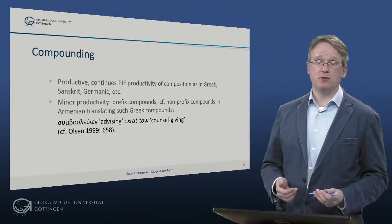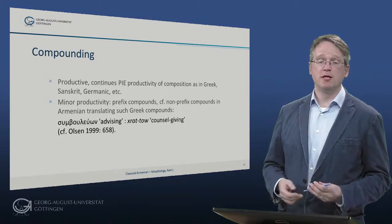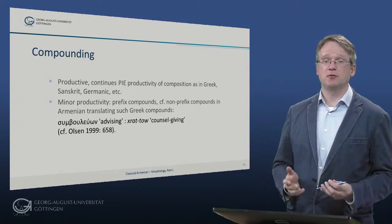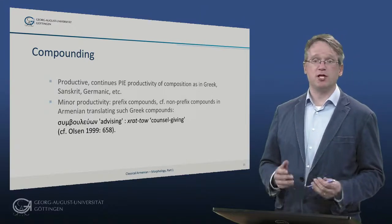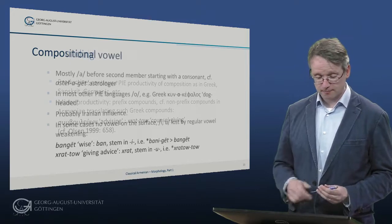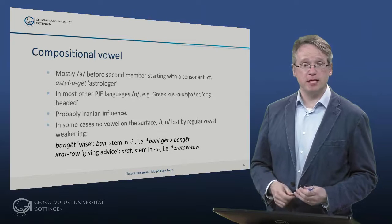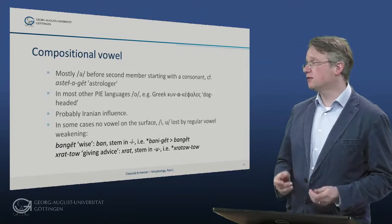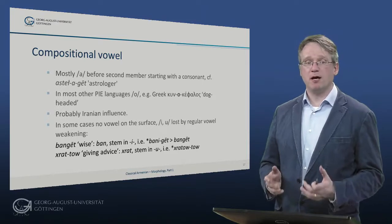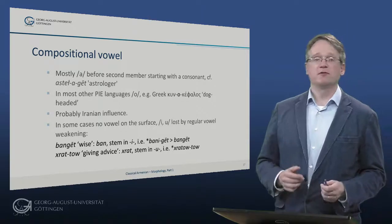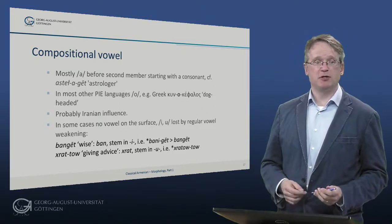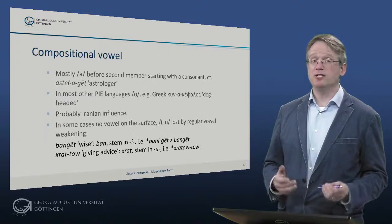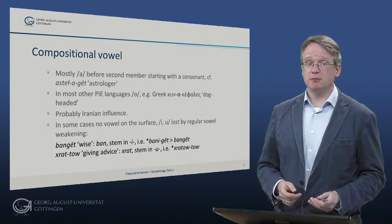When translating compound forms from Greek, the Armenian translators use different types of compounds. An example is Greek symboleon – advising – which is translated with a periphrasis chrat-to – council-giving. In most compounds whose second member starts with a consonant, a vowel a intervenes between the first and the second member. For example, in asterageet – the astrologer – we have aster – star – and the compound vowel a, and then the adjective geet – knowing. From the Indo-European perspective this is somewhat unexpected, since in other languages such as Greek the linking vowel is o, as in kyno kephalos – dog-headed. It is probably Iranian again that provides the model, where the compound vowel is usually a.